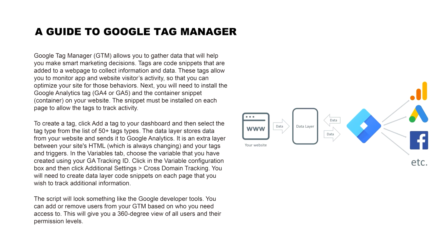In the Variables tab, choose the variable that you have created using your GTM tracking guide. Click in the Variable Configuration box and then click Additional Settings for cross-domain tracking.